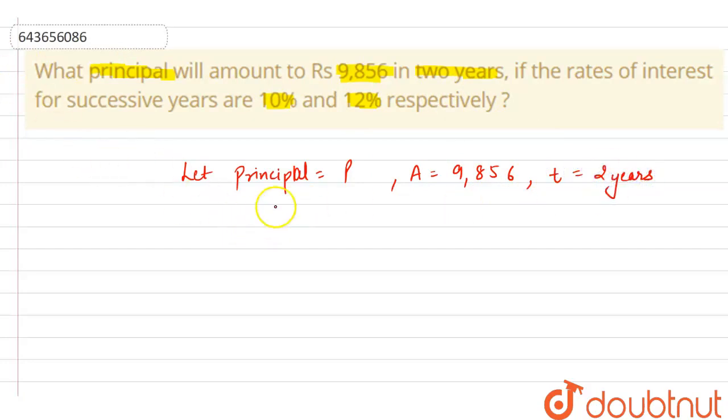And so now let's put what we have given in the formula, that is A equals to P into 1 plus R1 by 100 into 1 plus R2 by 100.